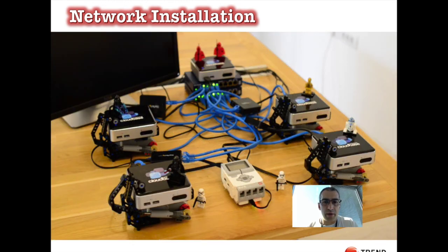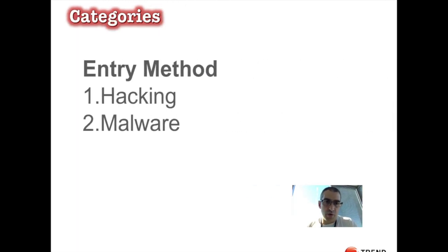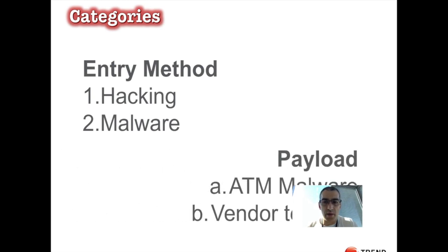Now I'm going to go through the network installation quickly. There have been a few cases where ATMs were attacked through the network. Normally the bad guys take over the network via phishing emails or keylogging to compromise accounts. Then they escalate privileges, getting into even the Active Directory server. Once they have the AD compromised, they identify the network segment that administrates the ATM network, jump into it, and install their tools. Entry is either by hacking or malware, and the payload is either ATM malware or vendor test tools.